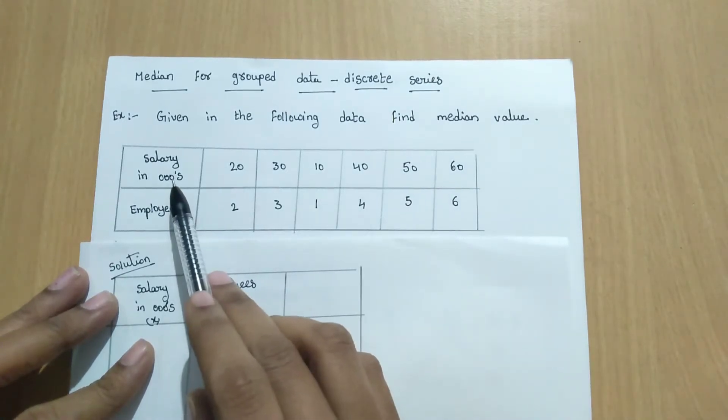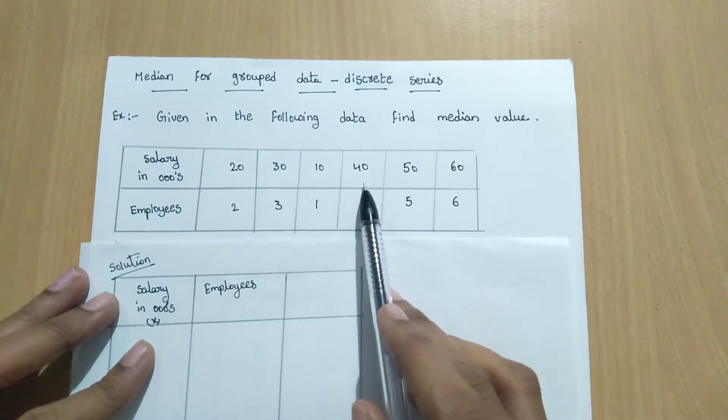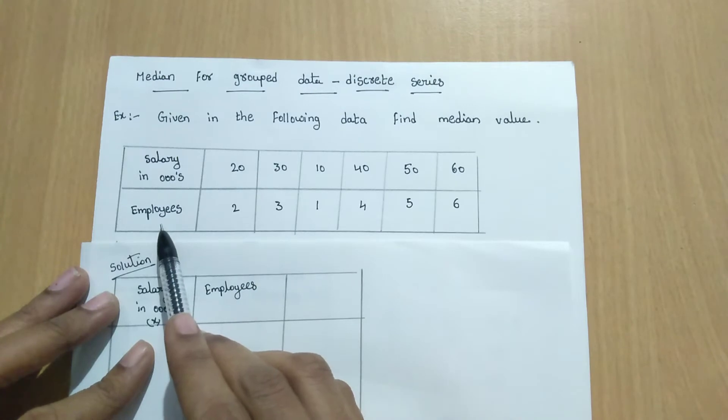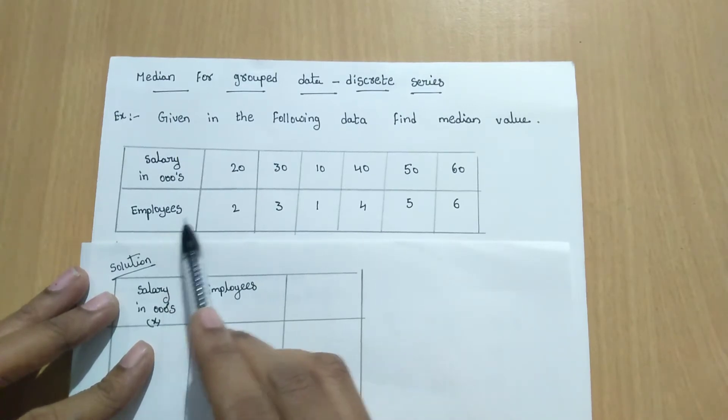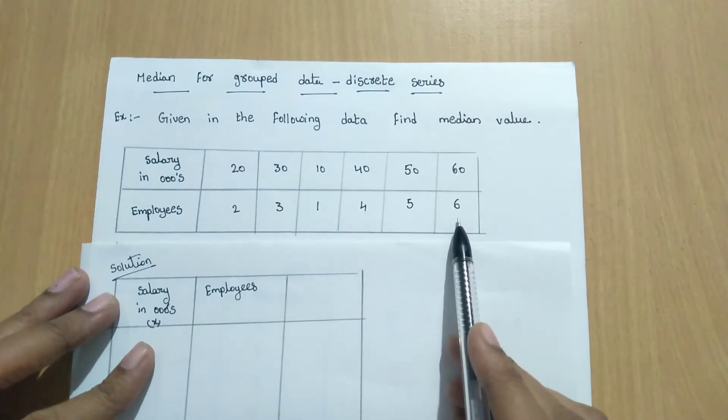Salaries in thousands: 20,000 salaries, 30,000, 10,000, 40,000, 50,000 and 60,000. So here employees. Employees means frequency values 2, 3, 1, 4, 5, 6.